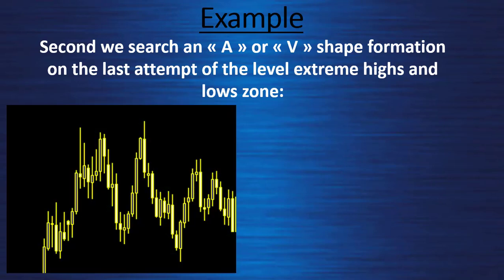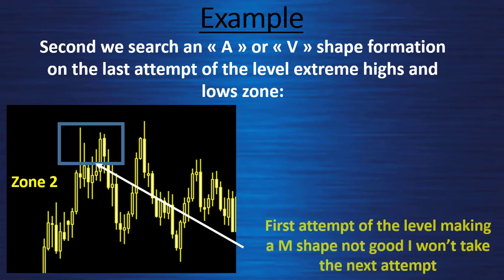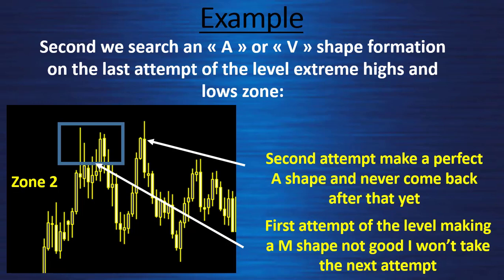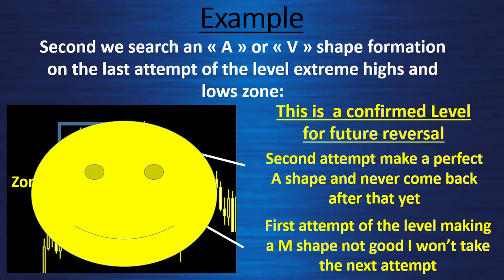Zone 2: here we have the M formation, which is also not very good for a V shape, so I disregard the next attempt after that. But look at the following attempt — it makes a perfect A shape and never comes back after that, so this is a confirmed level for a future reversal.